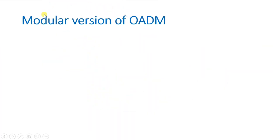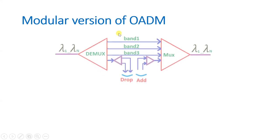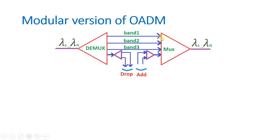Now let us see the second type of OADM — the modular version of OADM. In the modular version we do multiplexing and demultiplexing at two levels. You can see one demultiplexer connected at the first level and a second demultiplexer connected at the second level; similarly there is a major multiplexer and a second multiplexer. We have lambda 1 to lambda n wavelengths on the fiber going into the first demultiplexer.